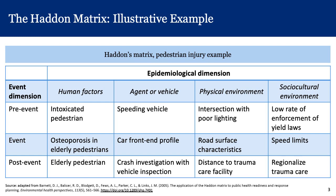The Haddon matrix looks like a grid with four columns and three rows. The four columns, left to right respectively, are human factors — in other words, human-related factors that come into play before, during, and after an event. The next column to the right is agent or vehicle, which is the injury or illness-causing agent.